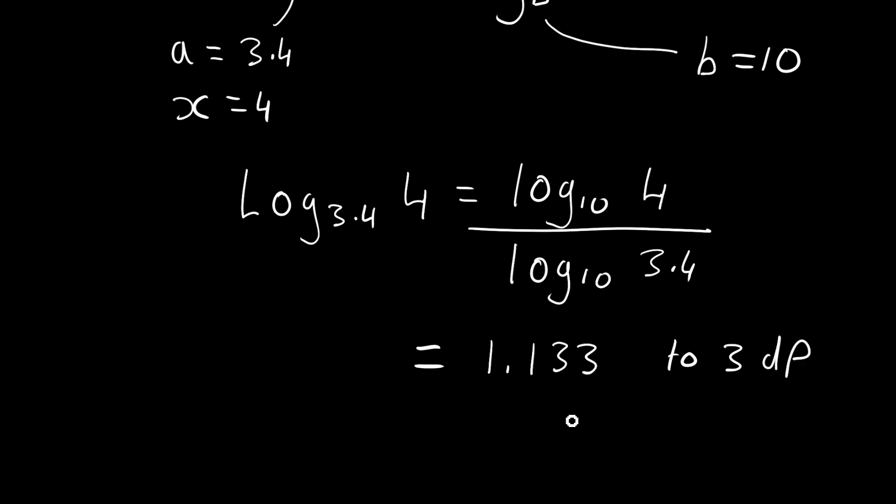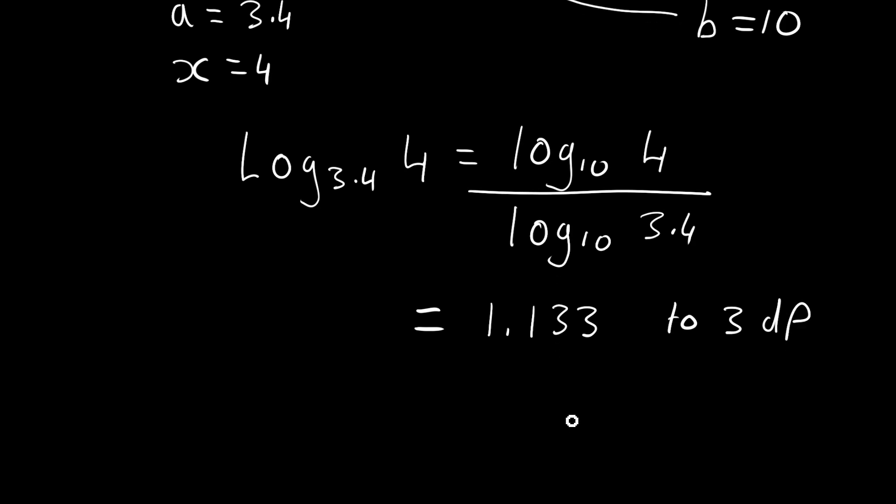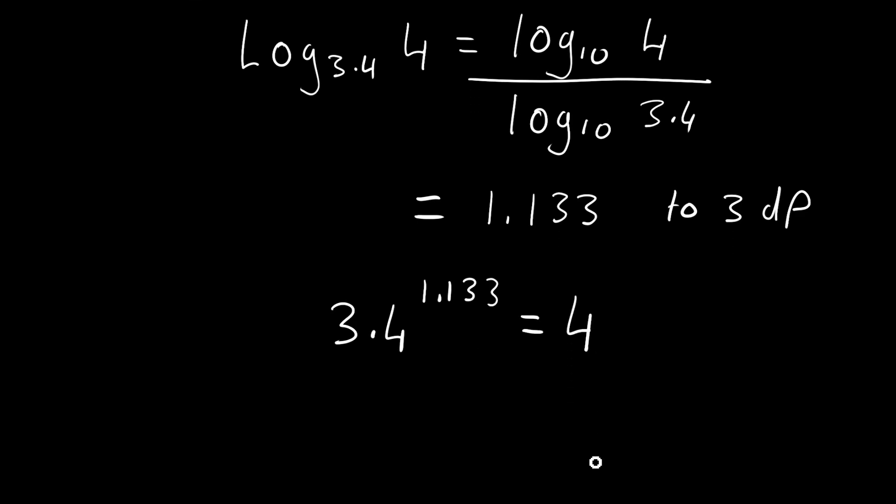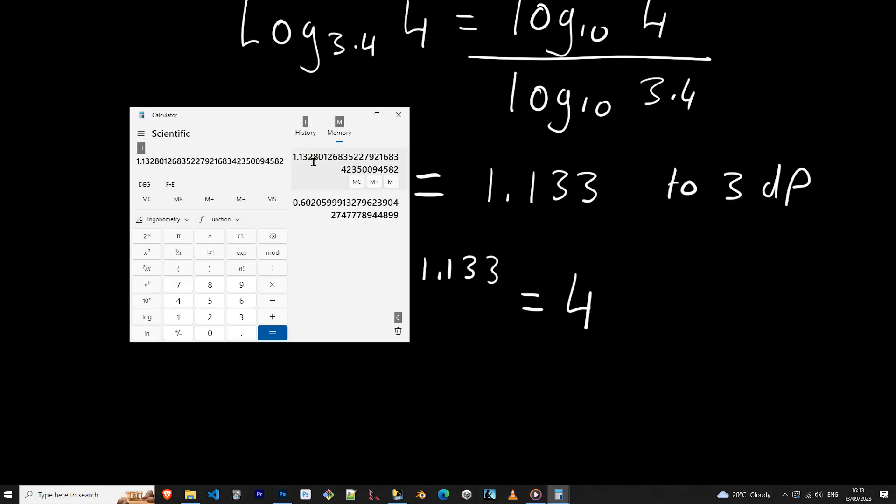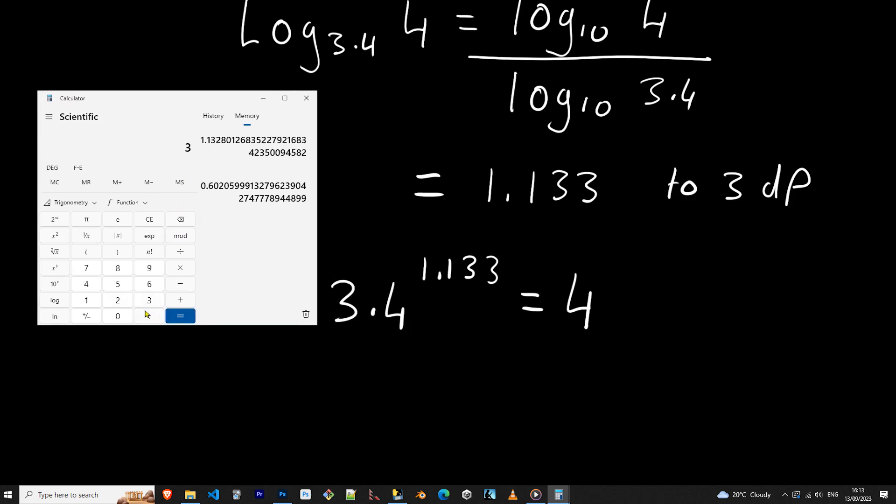Now we can test out our power here by writing the exponential. So if we've got 3.4 to the power of 1.133, that should come close to 4. Let's see if we can get this value. This is our exact value which we got stored in memory. If I do 3.4 to the power of 1.328, we get 4.